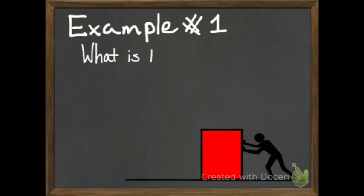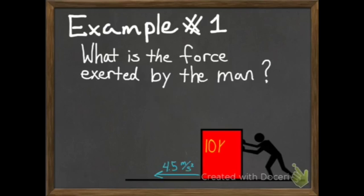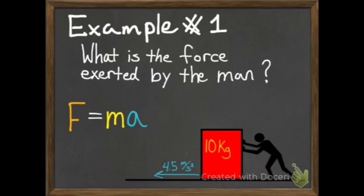Our first example: we've got a man pushing a box, and the question asks us what is the force exerted by the man. He's pushing a 10-kilogram box and it has an acceleration of 4.5 meters per second squared. Because of that, we're going to use the equation F equals MA. The first thing you need to do in these problems is figure out what equation to use, and you can know that by the units you're given. The 4.5 meters per second squared is an acceleration, and the 10 kilograms is a mass.